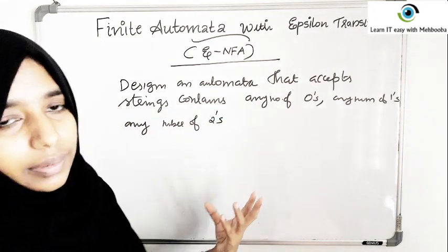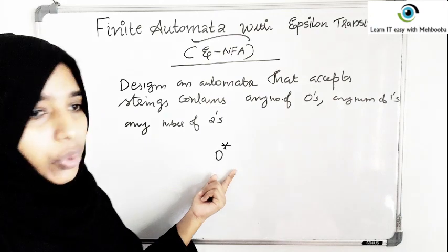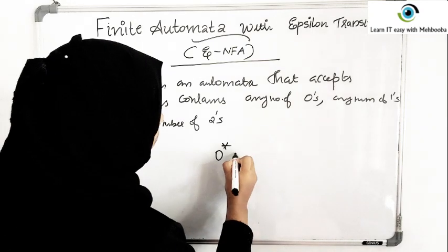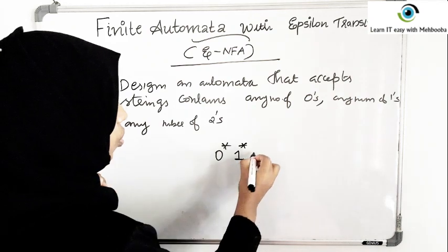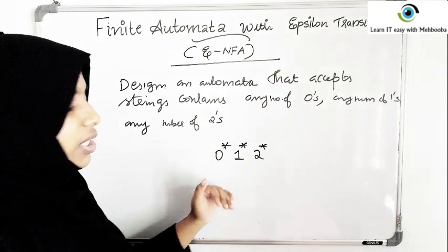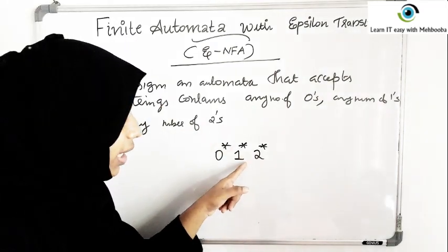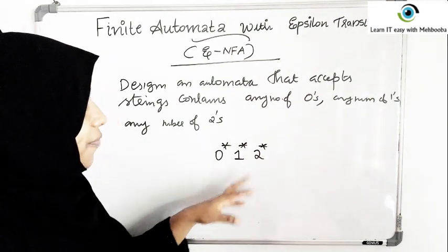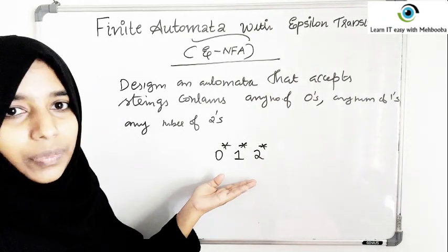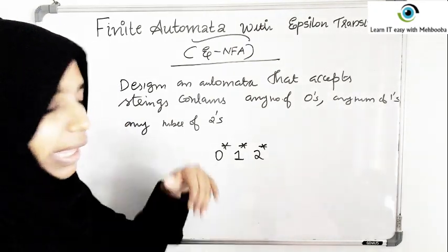Using mathematical notation, this is zero-star one-star two-star — meaning zero or more zeros followed by zero or more ones followed by zero or more twos. Even zero of each is acceptable, so the empty string should be accepted. You can have ten zeros, then any number of ones, then any number of twos.